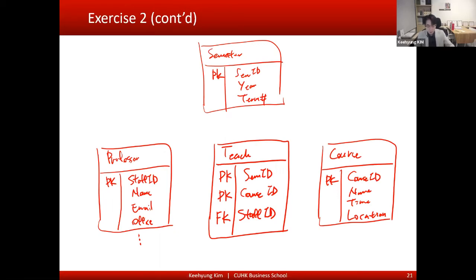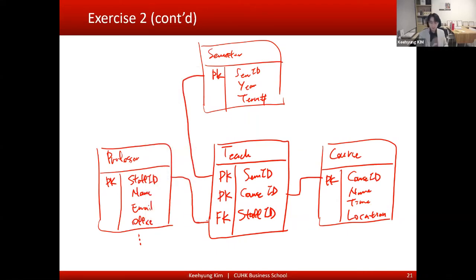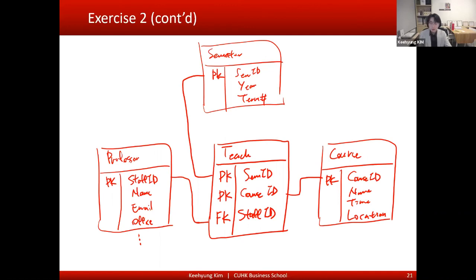Then we connect the tables: semester ID is connected with semester ID here, course ID is connected here, and staff ID is connected with staff ID. The last step is to define cardinality. Whenever a ternary relationship is made into a table and connected with the other entities, those connections should become one-to-many.